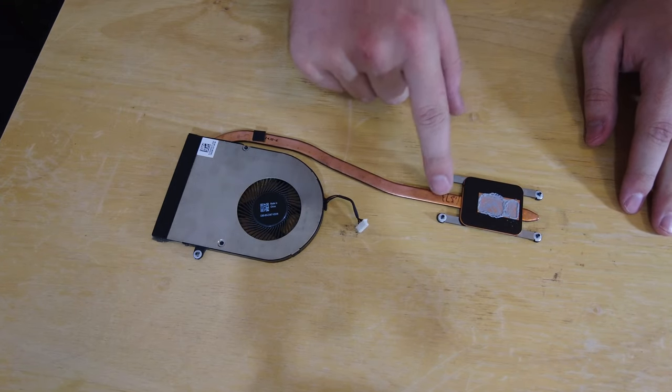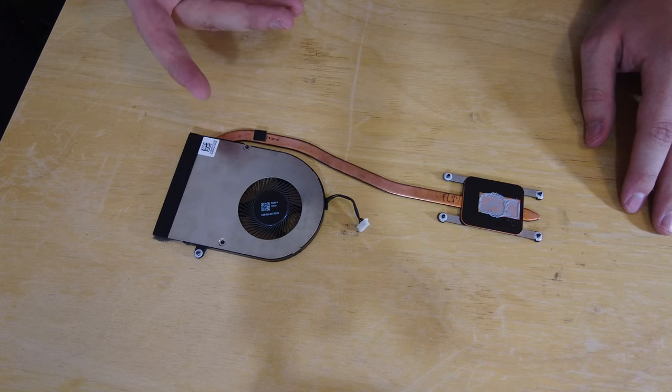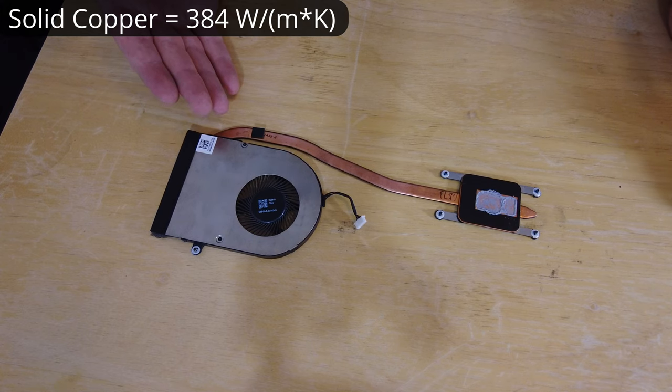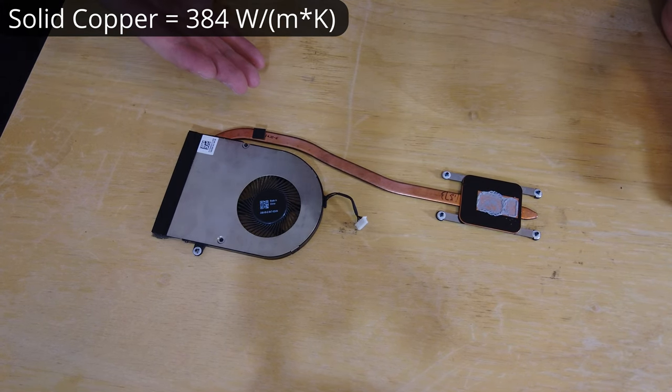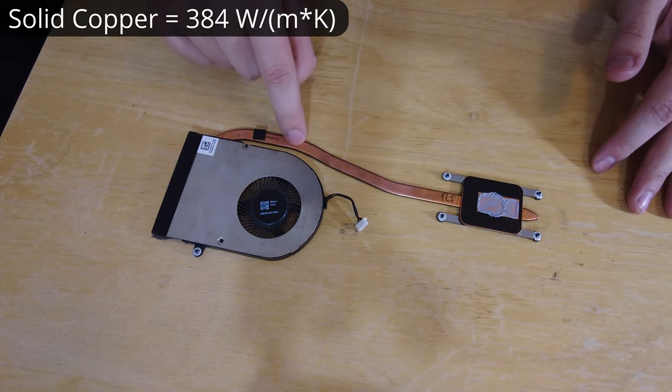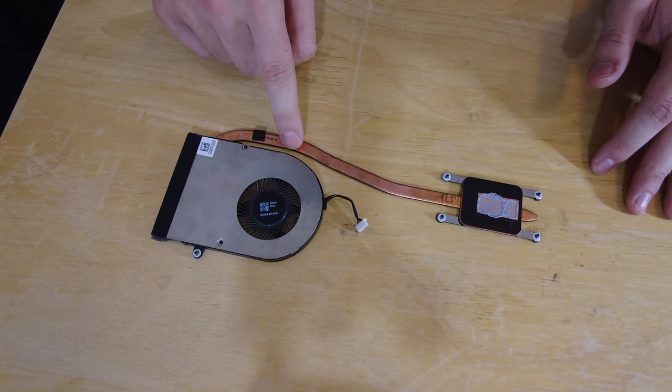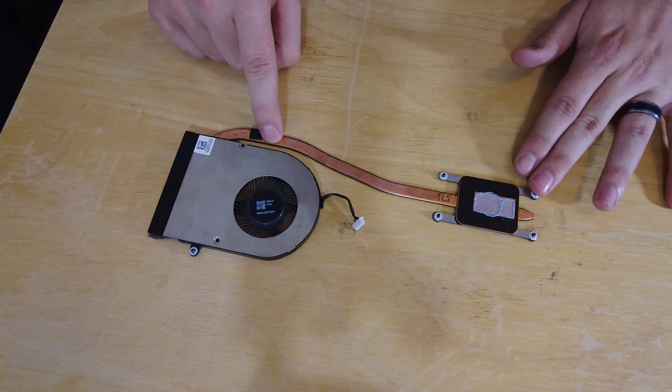Of course, copper, which is what it's made of, is an obvious choice. But with a thermal conductivity of about 384 watts per meter Kelvin, it isn't actually enough on its own. We need to augment and supercharge the heat transfer characteristics. And that is where this heat pipe design comes in.